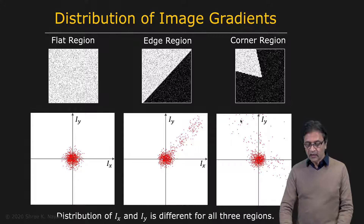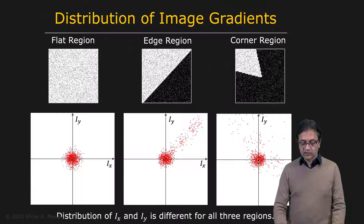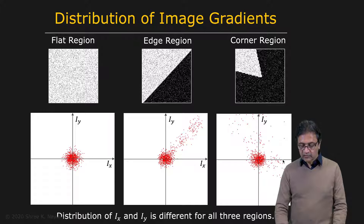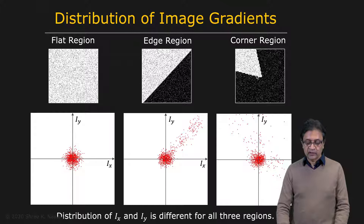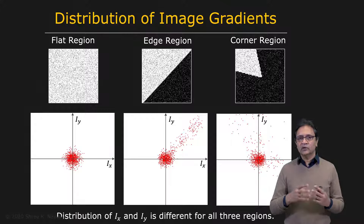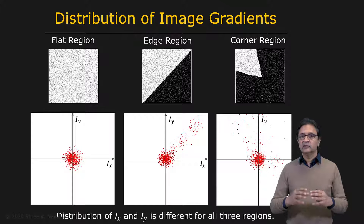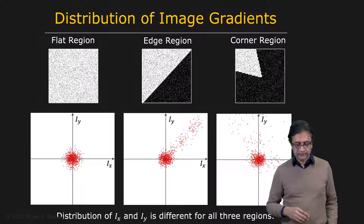In the case of the corner, you again get a compact cluster from the flat regions, but you also get two additional clusters. One cluster has very large Ix values from one edge with low Iy values, and the other cluster has large Iy values from the perpendicular edge with low Ix values. The key idea is that we want to quantify this structure with a small number of parameters, and then use those parameters to classify the region as flat, edge, or corner.